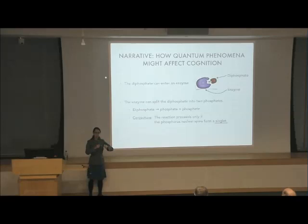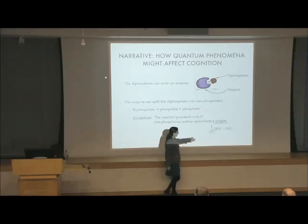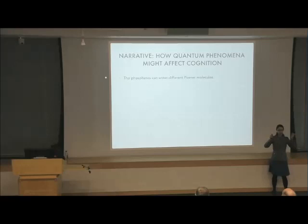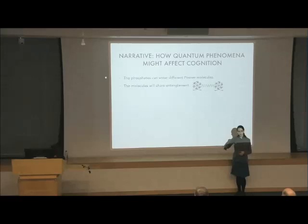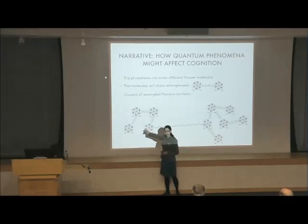This diphosphate can then enter an enzyme called pyrophosphatase. The enzyme can hydrolyze the diphosphate and break it into two pieces. Matthew has argued that that reaction proceeds only if those phosphorus nuclear spins form a singlet. So the two phosphates that come out of the enzyme would have phosphorus nuclear spins that are actually entangled — that is a conjecture that needs to be checked. Suppose that these phosphates enter different Posner molecules. The Posner molecules will then be entangled. One Posner molecule has other phosphates, and those could be entangled with other Posner molecules. So we could end up with clouds of entangled Posners.